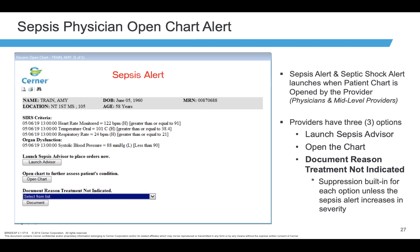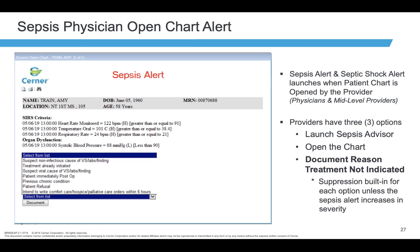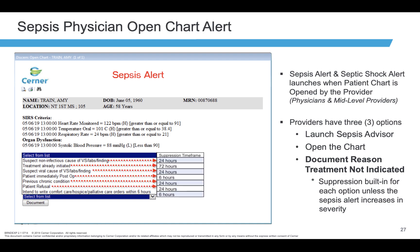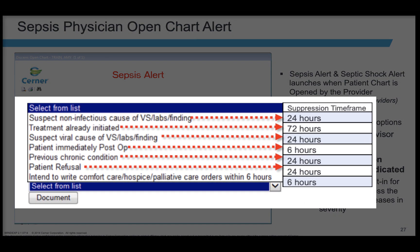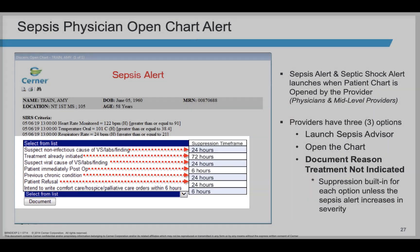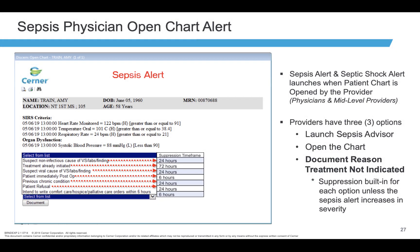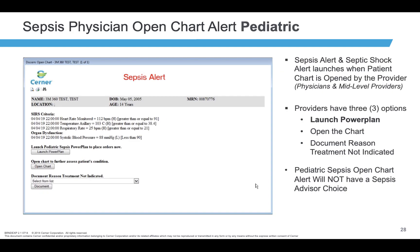When receiving the Sepsis Open Chart Alert, clicking on Open Chart allows you to open the patient's chart without running the Sepsis Advisor. However, it will alert you again the next time you open the patient's chart. You also have the ability to document reasons not indicated if appropriate. Selecting these reasons will suppress the sepsis alerts for a number of hours depending on the reason selected. If a higher level of alert criteria is met, this overrides the suppression and alerts the provider and nurse.